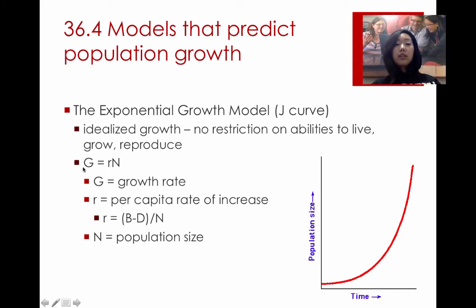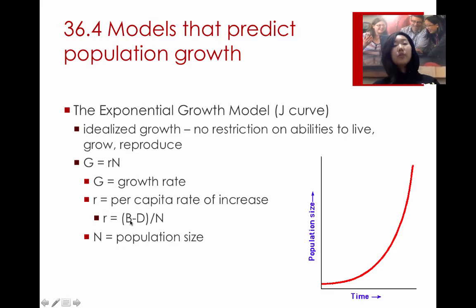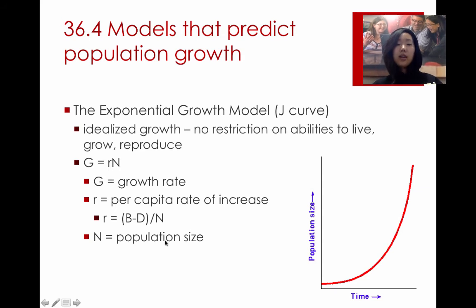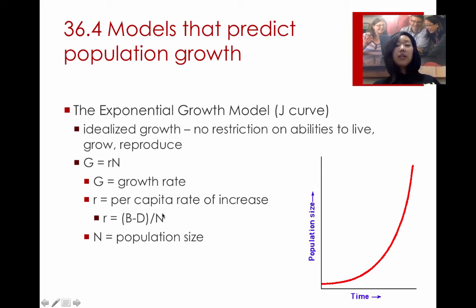In the formula G = Rn, G represents the growth rate, and R is the per capita rate of increase — that tells you the maximum amount of reproduction per individual, or how much one individual can contribute on average to the growth. To calculate R, it's births plus immigration minus deaths minus emigration, all divided by n. And n is equal to the population size. So G is really just equal to the total change in population: births plus immigration minus deaths minus emigration.